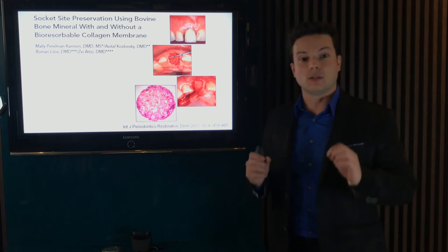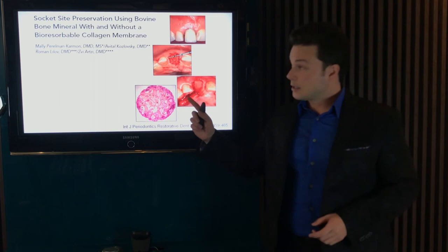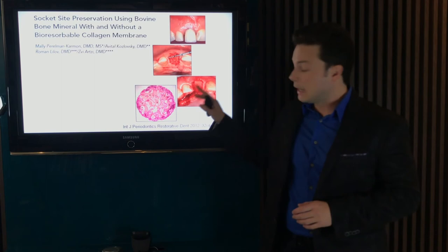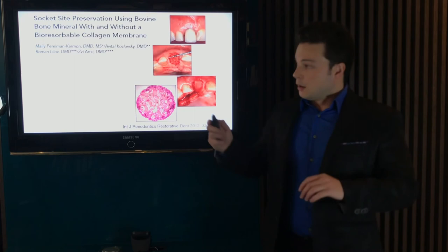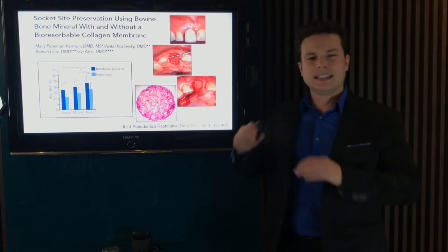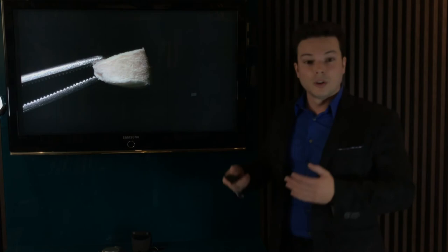Nevertheless, we can benefit from collagen membranes in alveolar ridge preservation by employing the membrane as a secondary sealing material under a soft tissue graft or a cellular matrix. In the study by Perimon-Carmon and collaborators, alveolar sockets were preserved with xenogenous grafts and sealed with soft tissue pedicles from the palate, with or without collagen membranes underneath. The membrane-protected sockets showed increased bone formation compared to unprotected sockets. Thus, this double sealing strategy can be potentially interesting in our alveolar ridge preservation procedures.